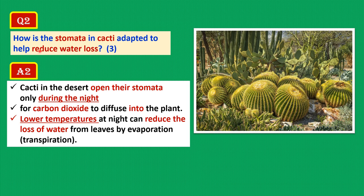How are the stomata in cacti adapted to reduce water loss? Cacti live in the desert, which is hot and dry. One way they reduce water loss through the stomata is by opening their stomata only during the night for carbon dioxide to diffuse in; this carbon dioxide is then used in photosynthesis later during the daytime. Lower temperatures at night reduce the evaporation of water from the leaves, so the stomata open at night when the rate of water loss is reduced.